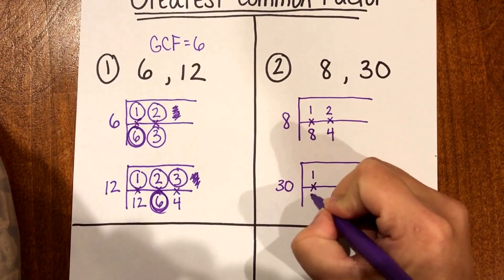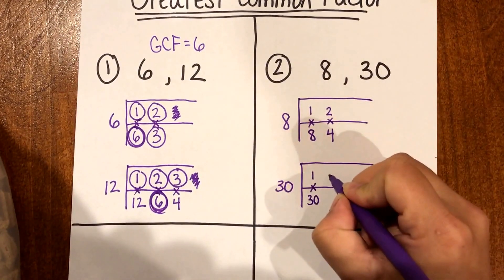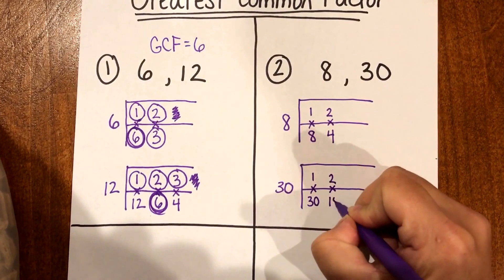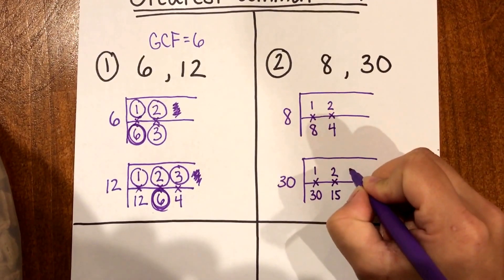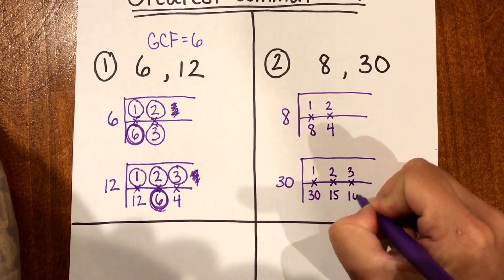Then with 30. 1 times 30 is 30. Go to 2. 2 times 15 is 30. Then I can go to 3. 3 times 10 is 30.